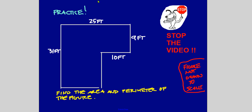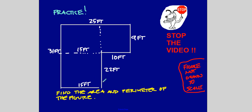First, find the missing dimensions. The total length is 31 feet, and this piece is 9 feet, so this missing piece is 31 minus 9, which is 22 feet. Going up and down: the total is 25 feet, and this section is 10 feet, so this has to be 15 feet. I'll split this into two rectangles. Rectangle one is 9 by 25, giving an area of 225 square feet.